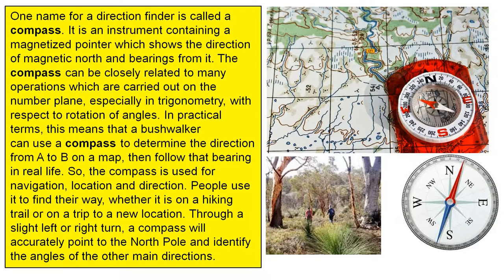The compass can be closely related to many operations which are carried out on the number plane, especially in trigonometry with respect to rotation of angles. In practical terms this means that a bushwalker can use a compass to determine the direction from A to B on a map, then follow that bearing in real life.